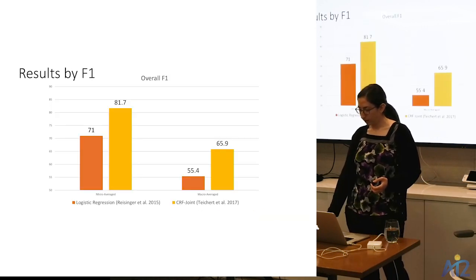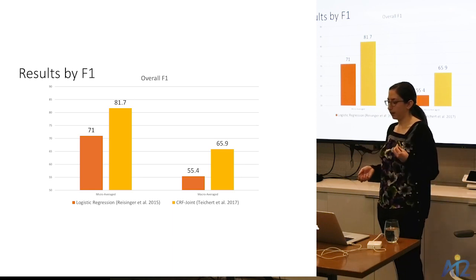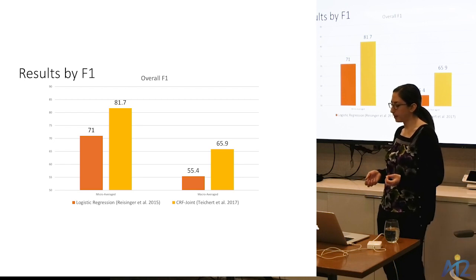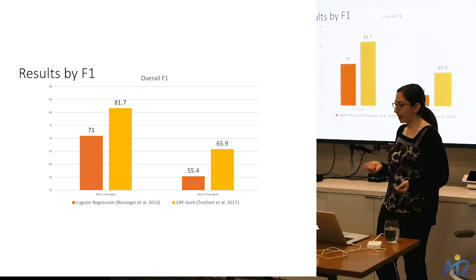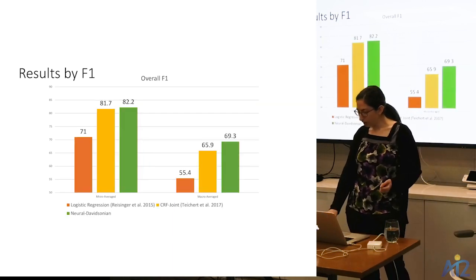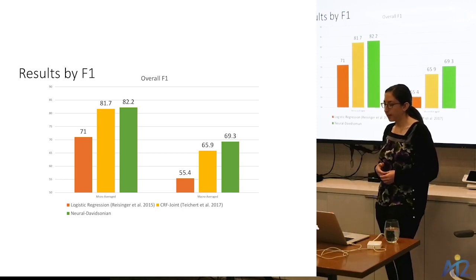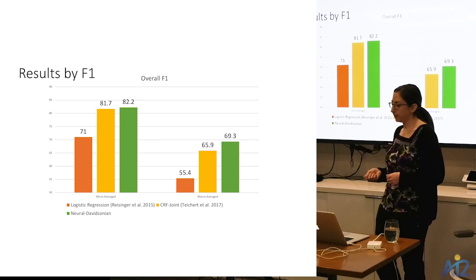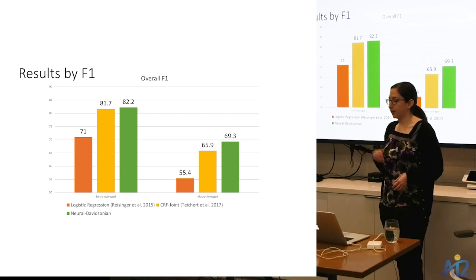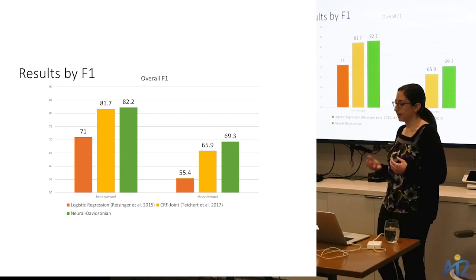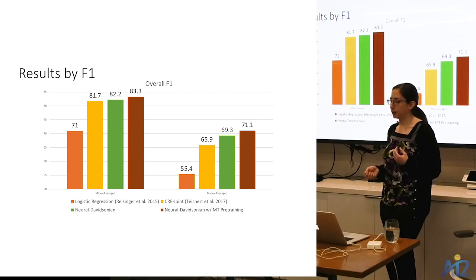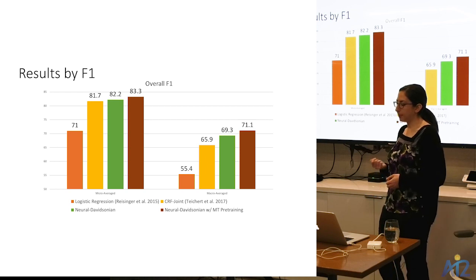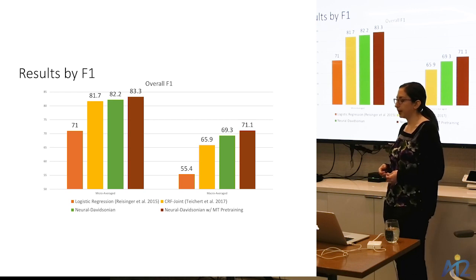Results on the semantic proto-role labeling task are measured by F1, looking at both micro-averaged and macro-averaged F1 across all proto-role properties. Two non-neural baselines from prior work serve as comparison. The vanilla Neural Davidsonian model without any multi-task training achieves state of the art — about half a point on micro-averaged and three and a half points on macro-averaged F1, with the biggest gains on the rarest properties. Adding the English-French translation multi-task setting provides another one to two point bump, improving state of the art by about two to five points overall.